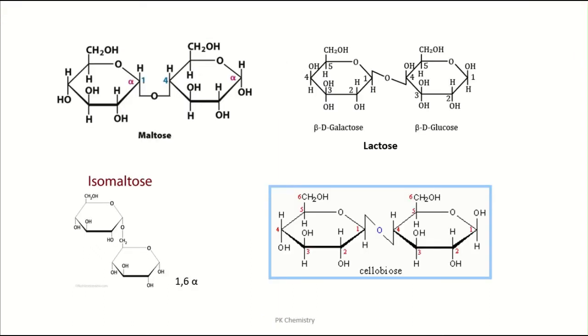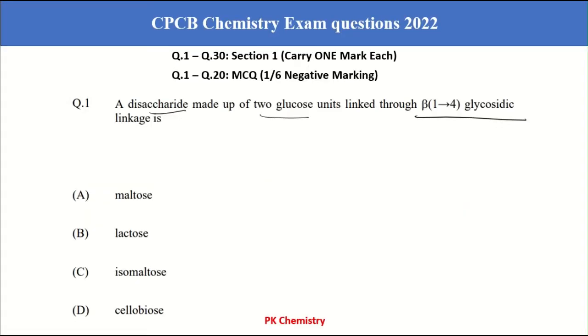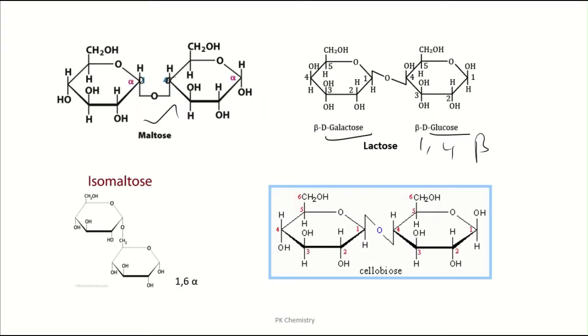Here maltose is having 1,4 glycosidic linkage. Here lactose having the 1,4 alpha maltose. Here 1,4 beta. But galactose and glucose. But they asked combination of 2 glucose units linked through the beta-1,4 glycosidic linkage.